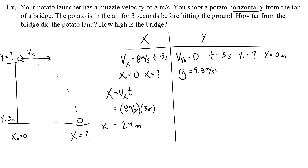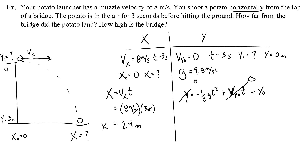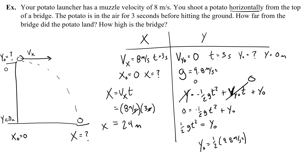To find the height, use y = −½gt² + v_y0·t + y_0. The initial y velocity is 0 and the final height is 0, so 0 = −½gt² + y_0, giving y_0 = ½gt² = 4.9 × (3)² = 4.9 × 9 = 44.1 meters. That's the height of the bridge.